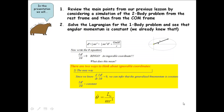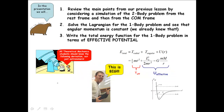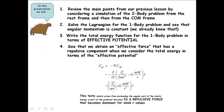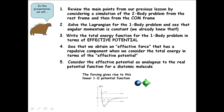Then we'll solve the Lagrangian for the one-body problem and see that angular momentum is constant. We'll write the total energy function for the one-body problem in terms of the effective potential for the orbit problem. We'll see that we obtain an effective force that has a repulsive component when we consider the total energy from the perspective of the effective potential. And finally we'll consider the effective potential as an analogy to the real potential function for a diatomic molecule.